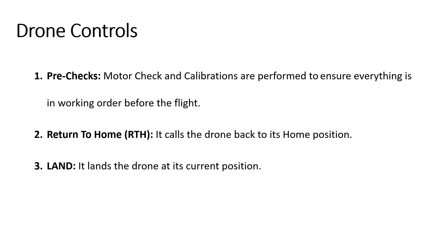The last step in the planning phase is getting to know the drone controls. We need to do some pre-checks, which help to ensure that the drone is ready to fly and has no errors. Pre-checks contain the motor check and calibrations. Calibration ensures the accuracy of sensors — it is advised to calibrate the compass, gyroscope, and accelerometer before flight. Motor check is used to rotate the propellers at low speed to confirm all propellers are correctly fitted. The return to home feature calls the drone back to its base position. The land button is used to land the drone at its current position — for example, if there is high wind, instead of triggering return to home, we can use land to land the drone at its current position.